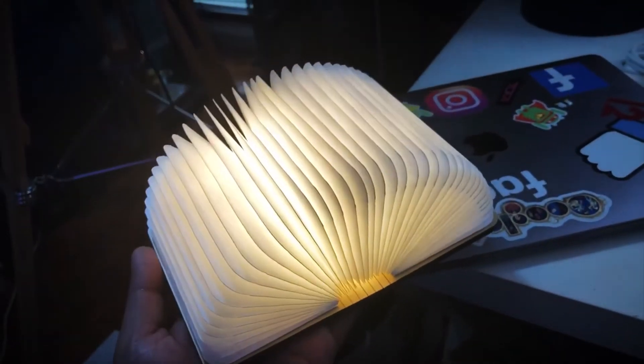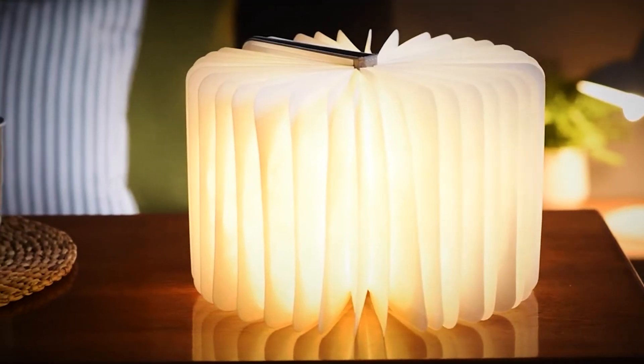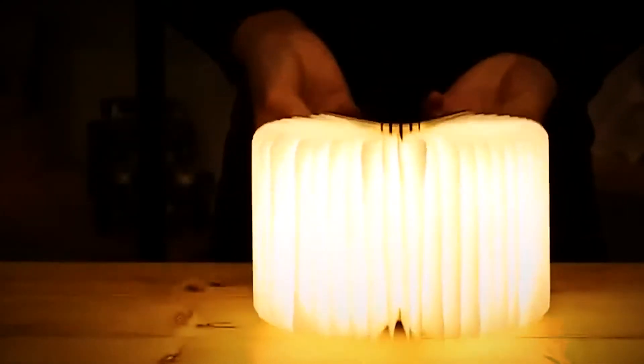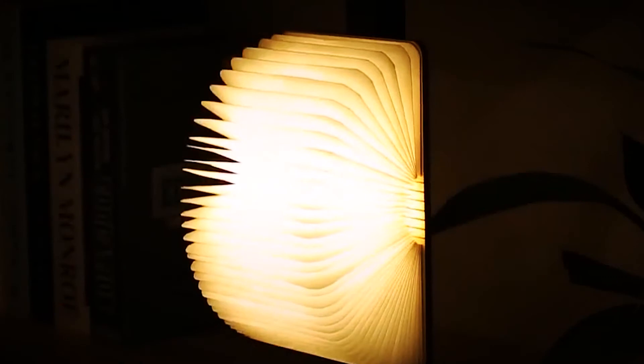Magnets are used to keep it in place, making it a one-of-a-kind style. A powerful magnet on both the top and bottom cover allows the book to be formed as a round or half circle, and it can be mounted on your table, desk, refrigerator, or magnetic wall as a nightlight.